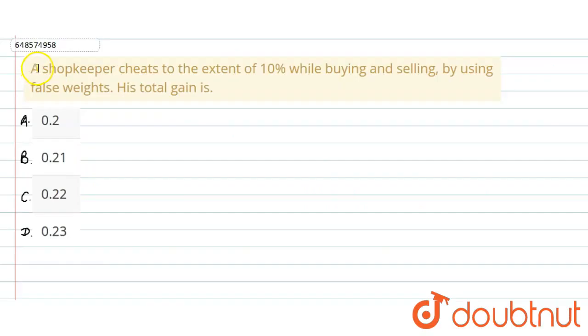Hello students, today we discuss a question. A shopkeeper cheats to the extent of 10% while buying and selling by using false weights. His total gain is: A) 0.2, B) 0.21, C) 0.22, and D) 0.23.